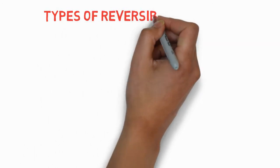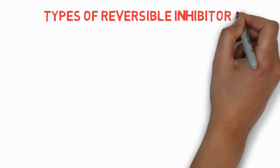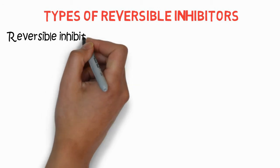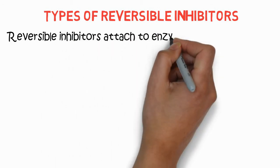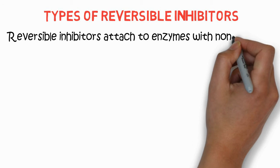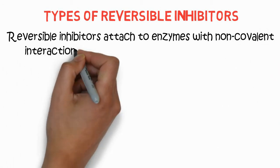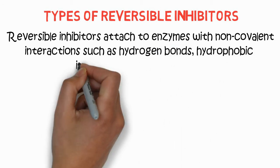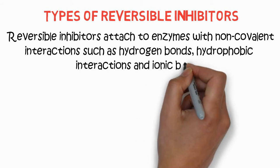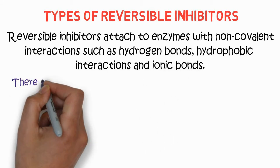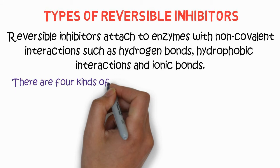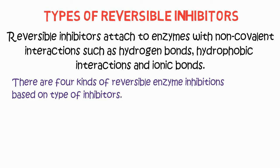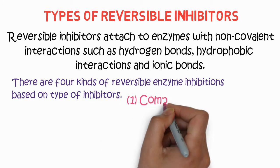Now we will discuss the types of reversible inhibitors. Reversible inhibitors are attached to enzymes with non-covalent interactions such as hydrogen bonds, hydrophobic interactions, and ionic bonds.